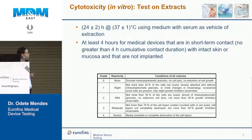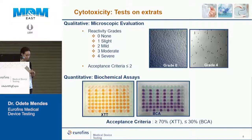After a certain period of time, you evaluate the reactivity in the cell culture — whether there is no effect, slight, mild, moderate, or severe response. Anything above a grade 2 is considered a cytotoxic effect. That is the basis of the cytotoxicity test.